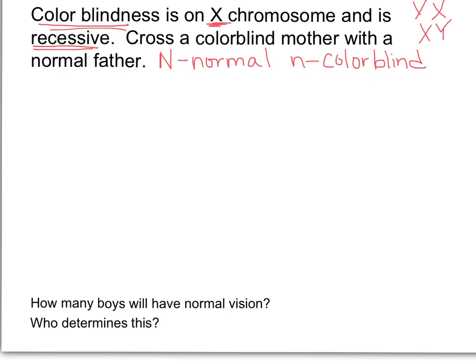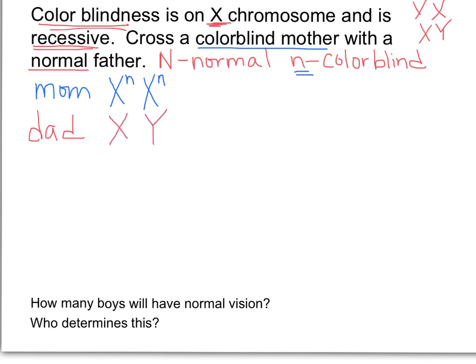I'm going to take a mom — she's colorblind. Because she's female, she has two X's, and in order to be colorblind she has to have two recessive alleles: X superscript n, X superscript n. Dad is normal — he has an X and a Y because he's a boy, and he gets the normal allele on his X. There's nothing on the Y. The Y is so small there's no space for any genetic information allowing your eyes to see color. Now I'm going to make a Punnett square.